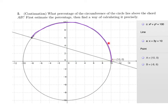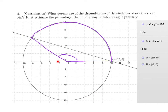Same idea: half of the arc would be 180 degrees, and 180 is 50% of 360. So if I can find this angle here — whatever this central angle is — divide that by 360, and that gives us our percentage of the circle above that chord. We have a right triangle here. We know the point up here is negative 8, 6. So we can find the angle.